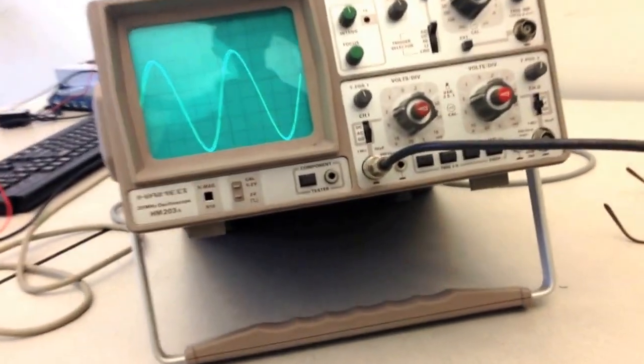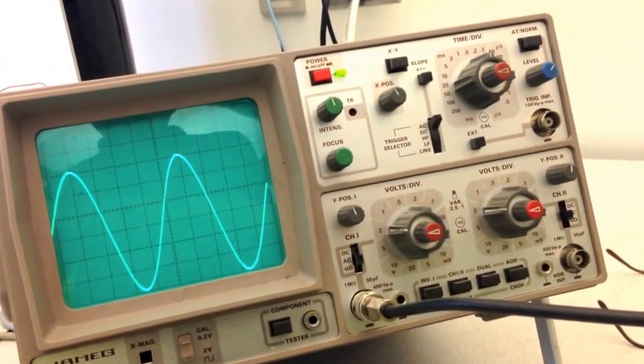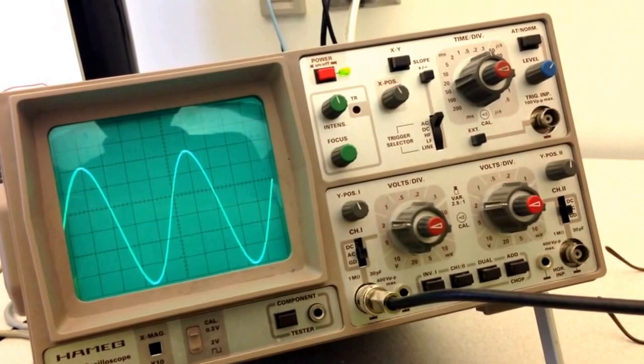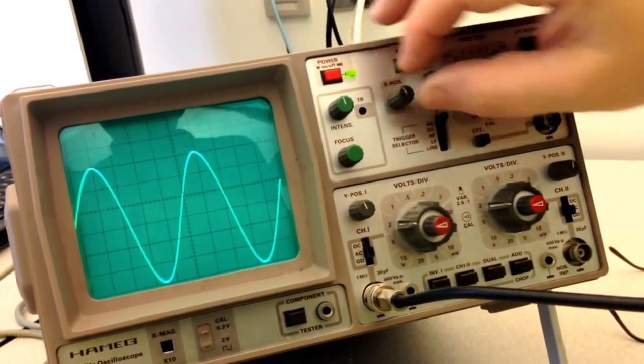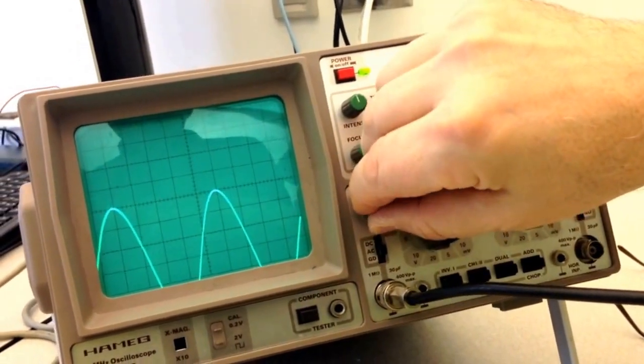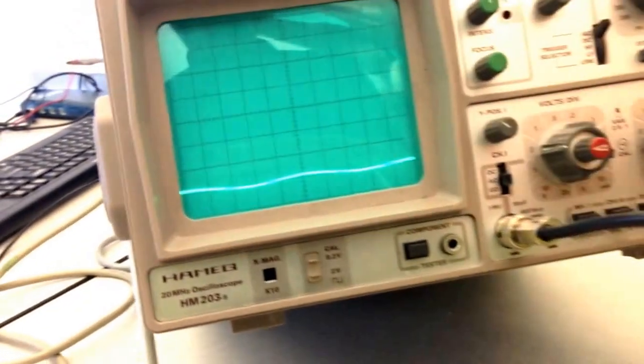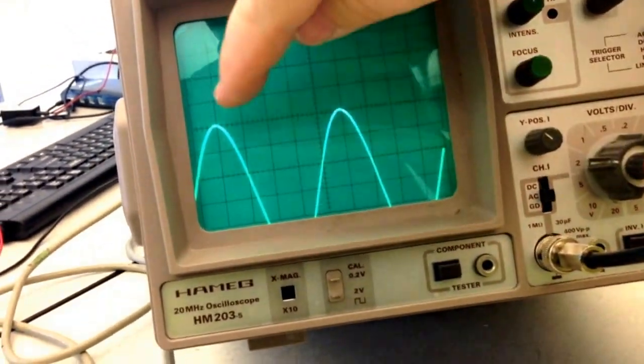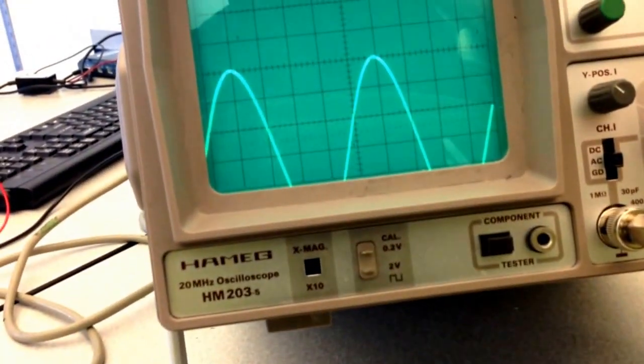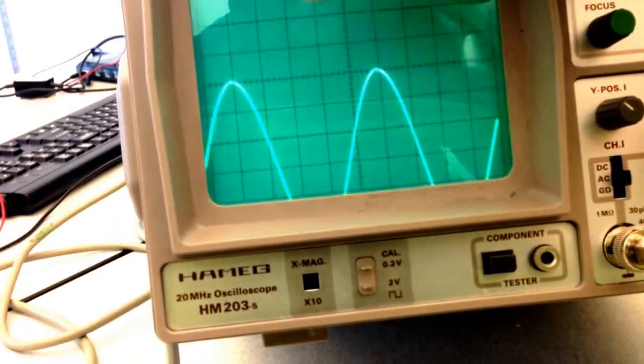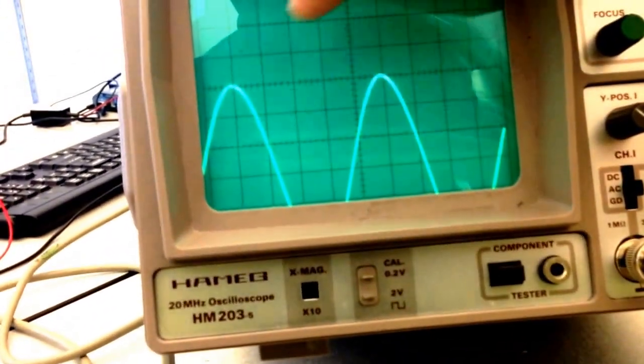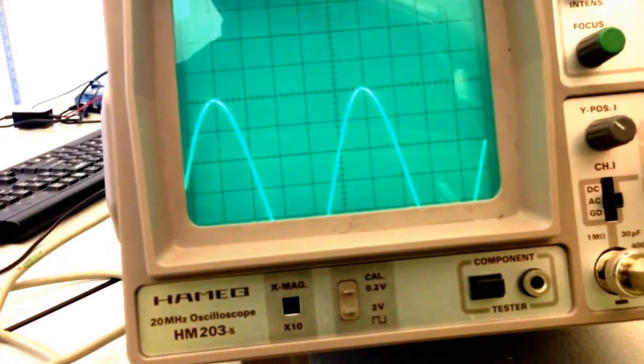Now, the next thing we want to do is determine what the frequency of this signal is. So, again, we can move it around. And if we position, there's a loose wire here, but when we position the peaks on this horizontal graduated line, we see that from one peak to the other peak, there's one, two, three, four, five divisions.